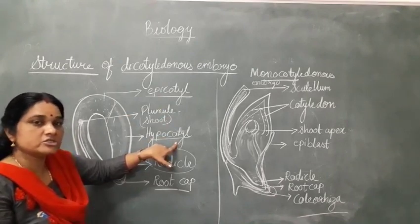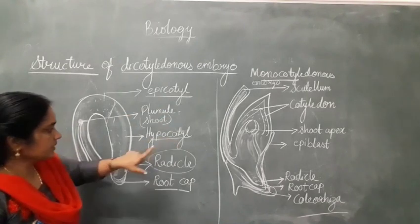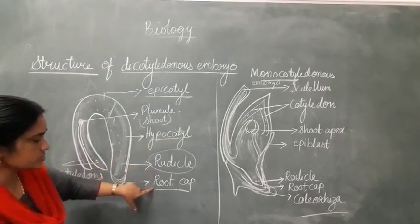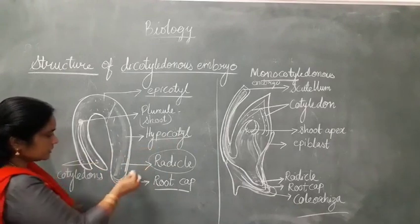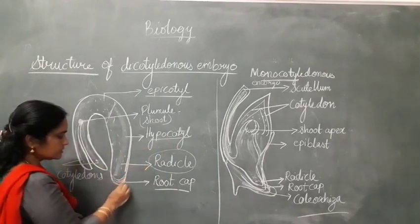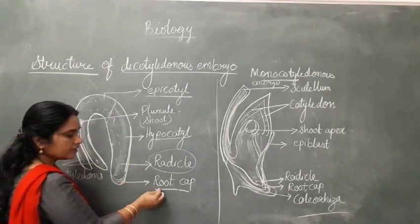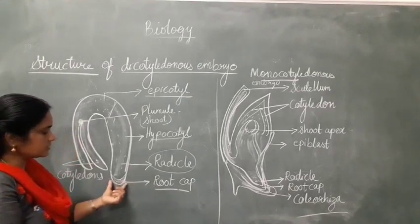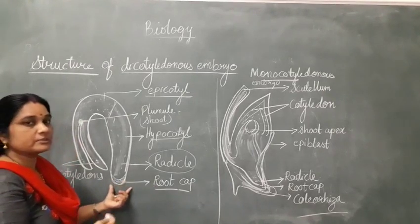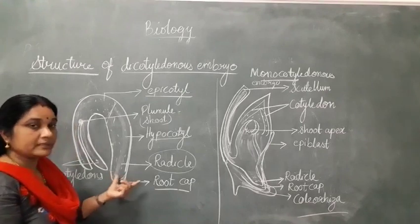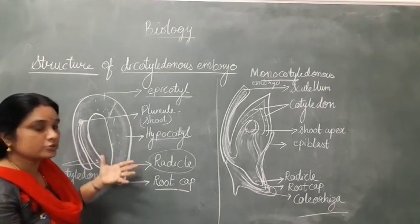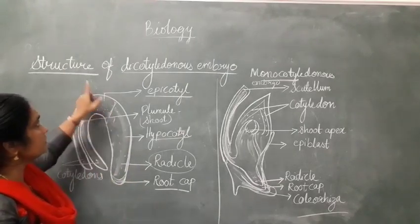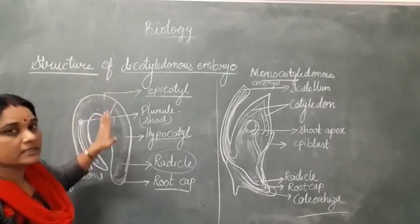The radicle gives rise to the root system and is protected by certain cells we call the root cap, found in mango and similar plants. The root cap gives protection to the root. The primary root and then secondary and tertiary roots will develop from that. This is the structure of a dicotyledonous embryo.